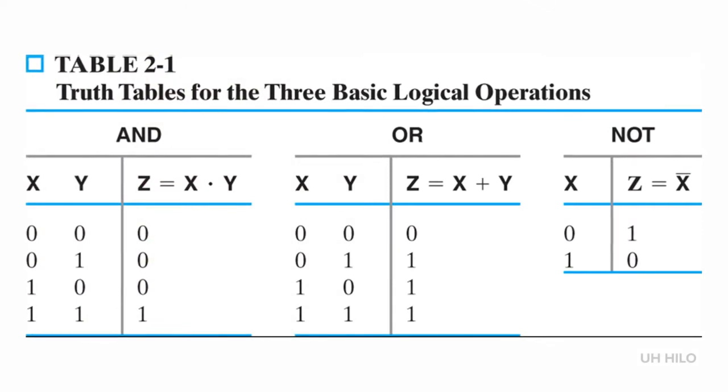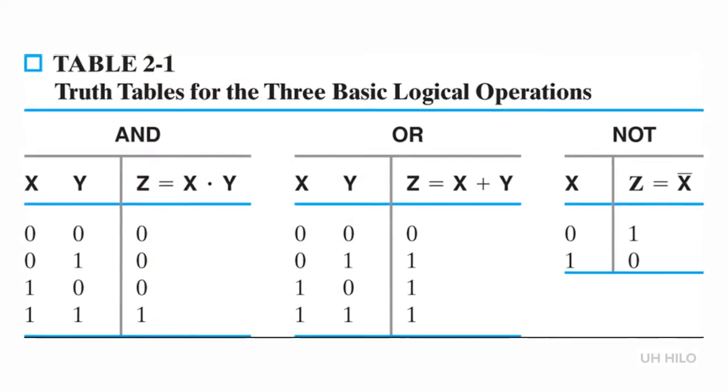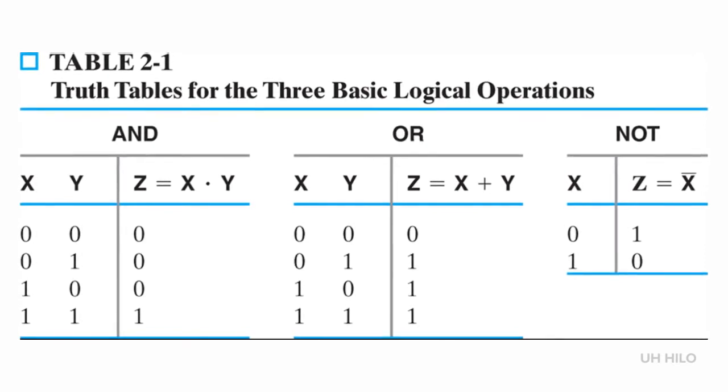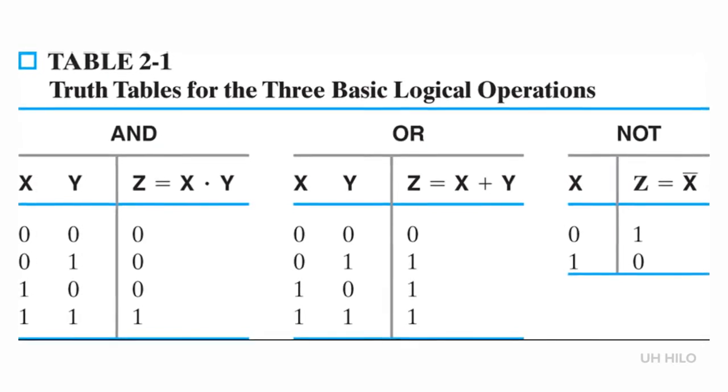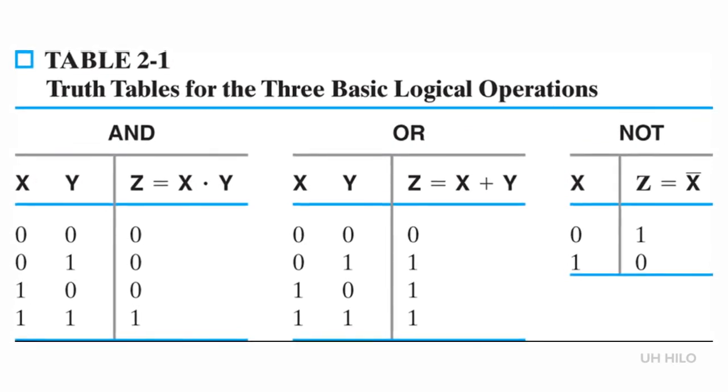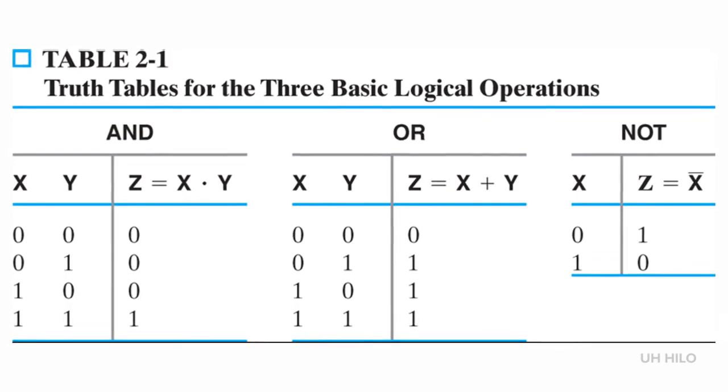The truth table for an operation is a table of combinations of the binary variables, showing the relationship between the values that the variables take on and the values of the results of the operations. Here you can see the truth tables for the three basic logical operations we just discussed: AND, OR, and NOT.